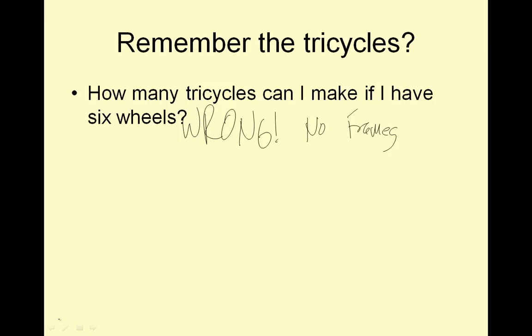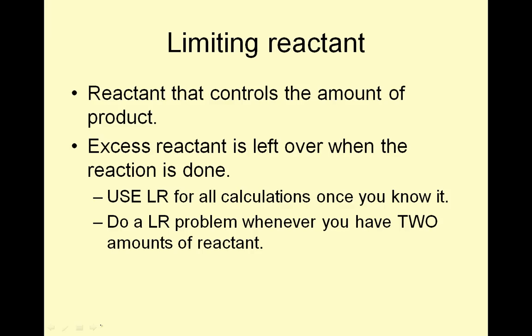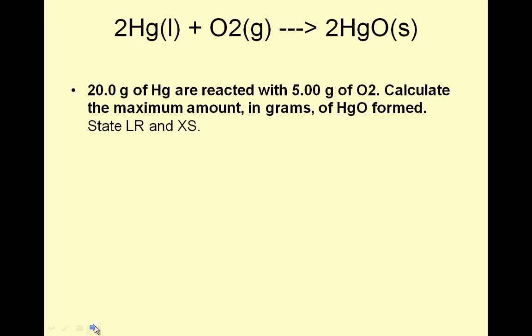So, if I have 6 wheels, it depends on how many frames, right? Frames could limit the number of tricycles. A limiting reactant is a reactant that controls the amount of product formed. Excess reactant is left over when your reaction is done. Use your limiting reactant for all calculations once you know it. Do a limiting reactant problem whenever you have two amounts of reactant.